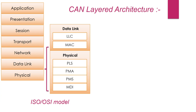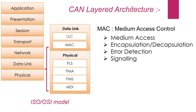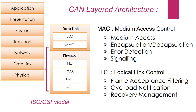The data link layer is divided into two sub-layers. MAC, which defines how devices in a network gain access to the medium, encapsulation and decapsulation of data, error detection and signaling. And logical link control, which is responsible for frame acceptance filtering, overload notification, and recovery management.